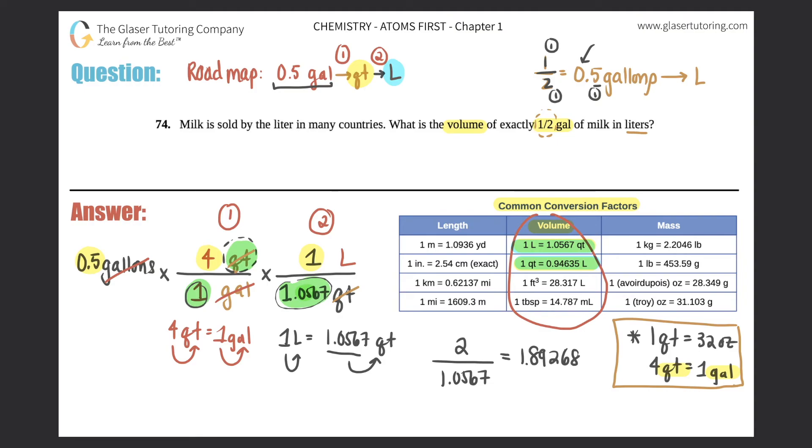But we need to give the correct sig figs. In this case, we started with only one sig fig, 0.5. And with conversions, you only give the sig figs for your given. You don't give any sig figs for any conversion factors because those are exact numbers. So this answer should only have one sig fig. I'm going to keep the one, and the next number will tell me if I have to round. And 8 is greater than 5, so it should turn into a 2. So it should be 2 liters, because liter was the last remaining unit.